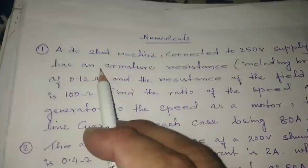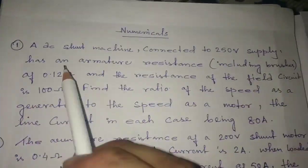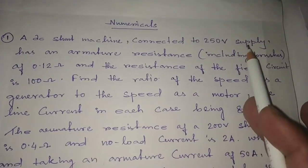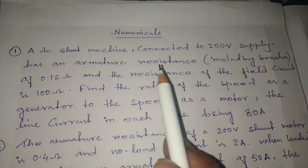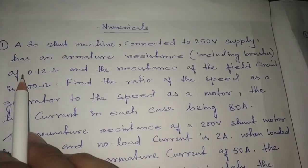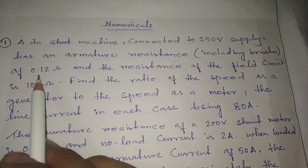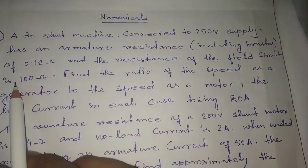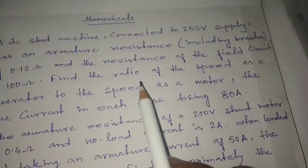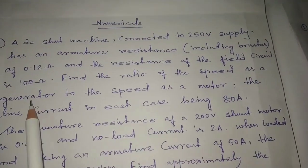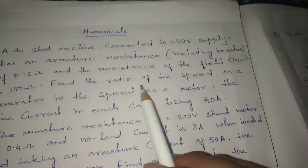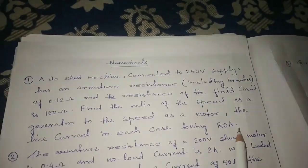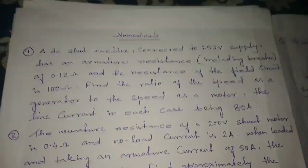Today we will solve DC machines. The question is: a DC shunt machine connected to 250 volts supply has an armature resistance including brushes of 0.12 ohm, and the resistance of the field circuit is 100 ohm. Find the ratio of the speed as a generator to the speed as a motor, the line current in each case being 80 amperes.